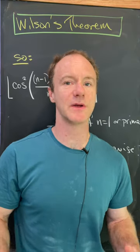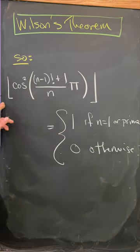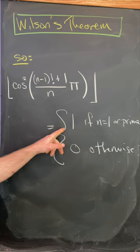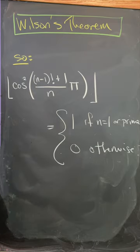We can package all that up into a prime testing function. The floor of the cosine squared of all of this stuff will output 1 if n is 1 or a prime and 0 otherwise.